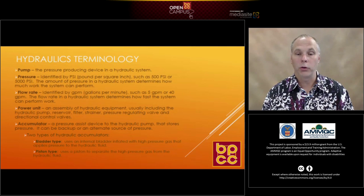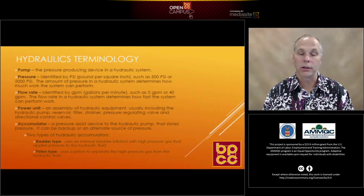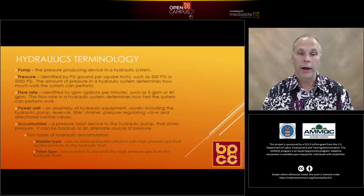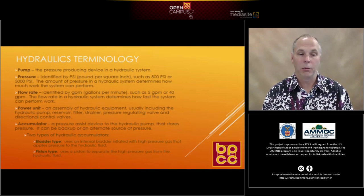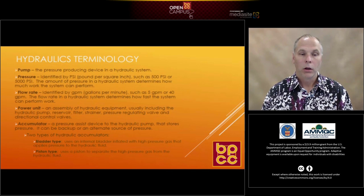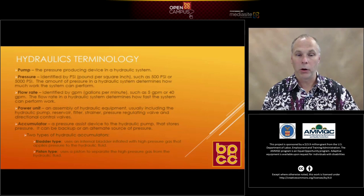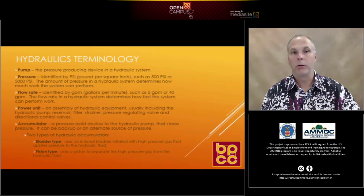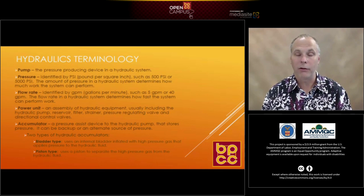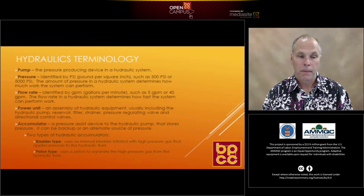The amount of pressure in a hydraulic system determines how much work the system can perform. If you have a 500 PSI system, everything in that system must be rated for 500 pounds or greater. You wouldn't want tubing connected to a cylinder or a hydraulic pump rated at only 50 PSI when the system is actually 500 PSI — you're creating a very unsafe condition.